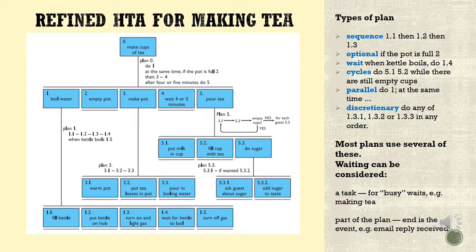One possible exception would be if we were planning to build a decision support system, in which case we would need to understand how someone thinks about the problem in order to build tools to help. Based on observation, your main task will be decomposed into sub-tasks and expanded to support the details needed in your system. This will be in hierarchical form, writing down various tasks and sub-tasks, so that all processes toward your main goal are successfully achieved.